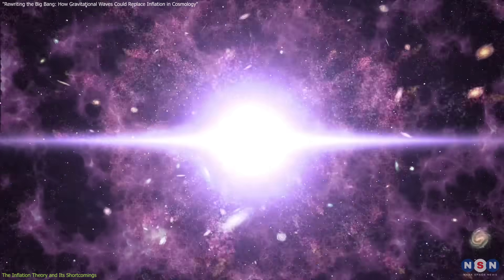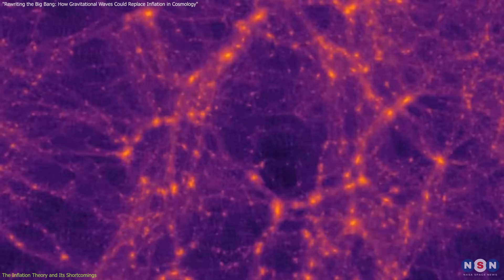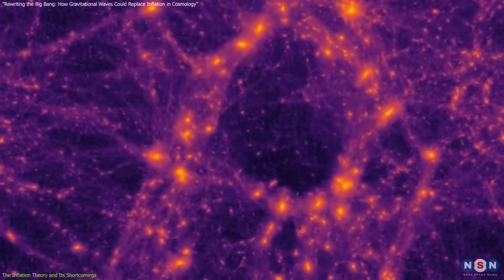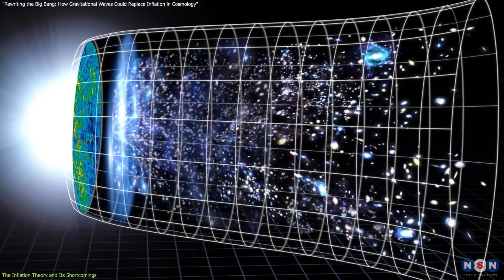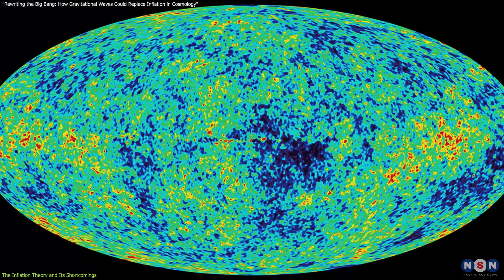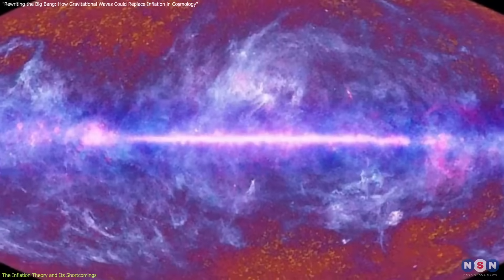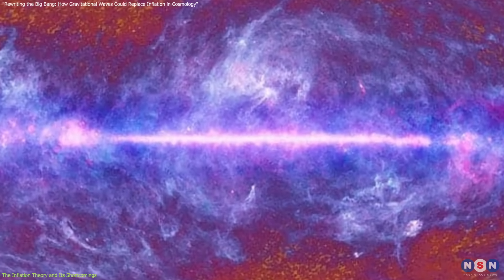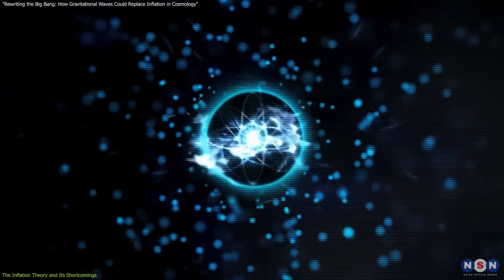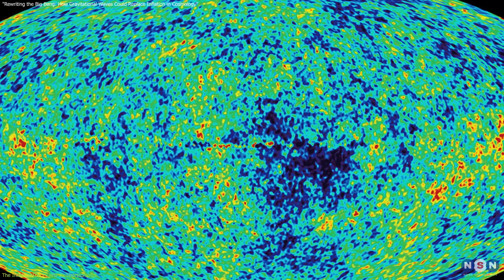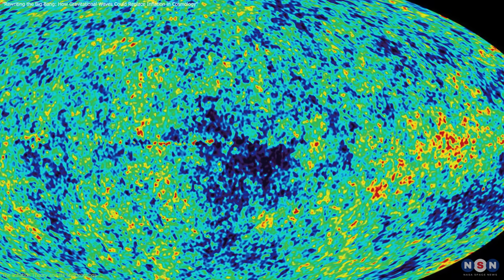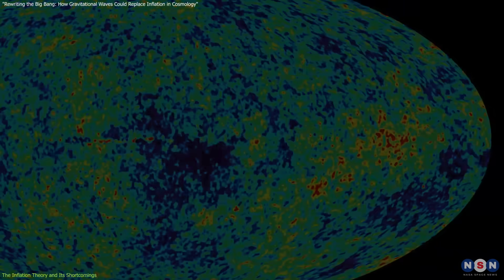This rapid expansion smoothed out irregularities, explaining why the universe appears homogeneous and isotropic on large scales. Inflation also explains the origin of the cosmic microwave background, a faint glow of radiation that permeates the universe. Quantum fluctuations in the inflating universe were stretched to macroscopic scales, leaving imprints in the CMB — observable today as tiny temperature variations which correspond to the initial seeds of galaxy formation.